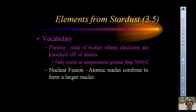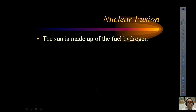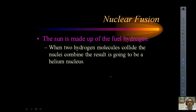Nuclear fusion is the process of atomic nuclei combining to form a larger nucleus. Two or more atoms collide, and their nuclei combine to form a single larger nucleus. The fuel of the sun is hydrogen, and when two hydrogen atoms collide, those nuclei combine and the single nucleus formed is helium.